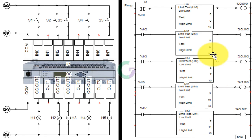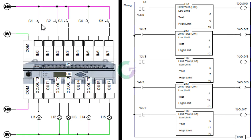सभी की low और high limit हमने same set की है। अब हम program को run करते हैं। Toggle switch 1 को जैसे ही on करते हैं तो input 0 on हो जाता है।